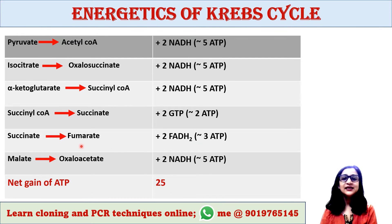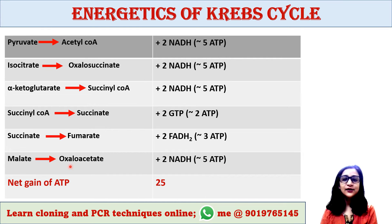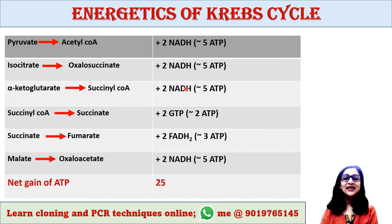2 molecules of GTP are produced when succinyl-CoA converts into succinate. 2 molecules of FADH2 are generated when succinate converts into fumarate. 2 molecules of NADH are produced when malate converts into oxaloacetate.